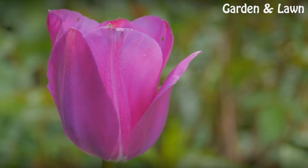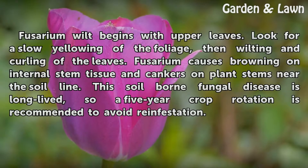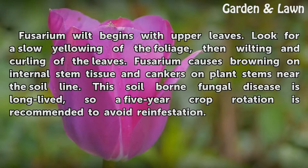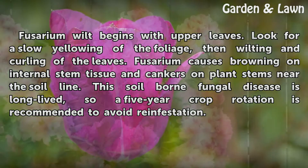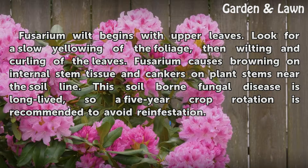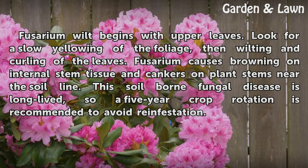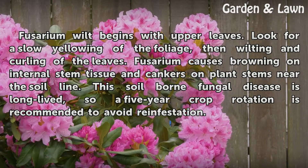Fusarium wilt begins with upper leaves. Look for a slow yellowing of the foliage, then wilting and curling of the leaves. Fusarium causes browning on internal stem tissue and cankers on plant stems near the soil line. This soil-borne fungal disease is long-lived, so a five-year crop rotation is recommended to avoid reinfestation.